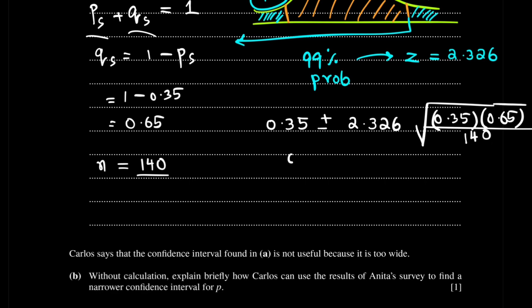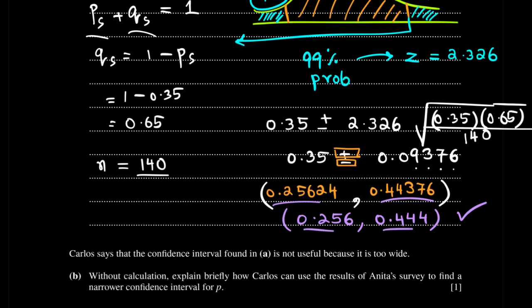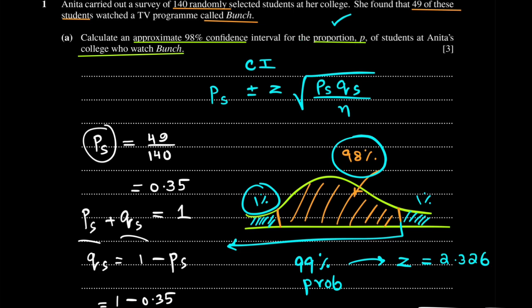So therefore 0.35 plus or minus 2.326 times the square root of 0.35 multiplied by 0.65 divided by 140. Using the calculator, this comes out to be 0.35 plus or minus 0.09376, working in four significant figures. The smaller value using the negative sign is 0.25624 and the bigger value using the positive sign is 0.44376. Rounded to three significant figures: 0.256 and 0.444 as the lower and upper bounds.